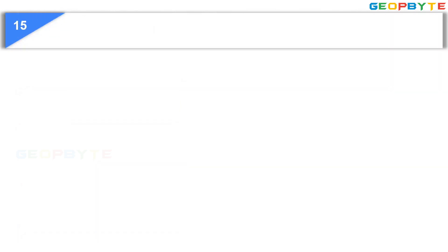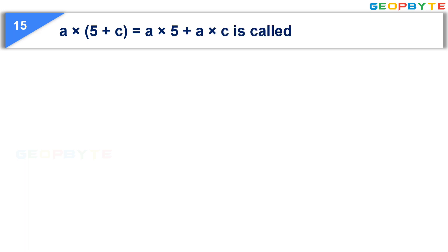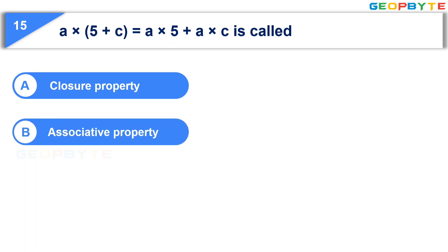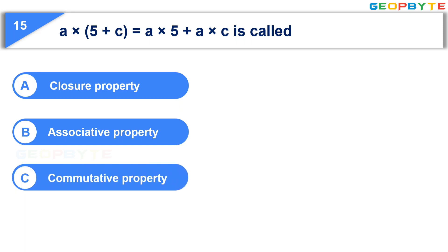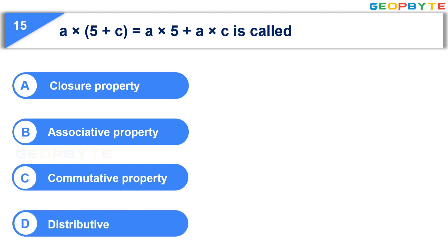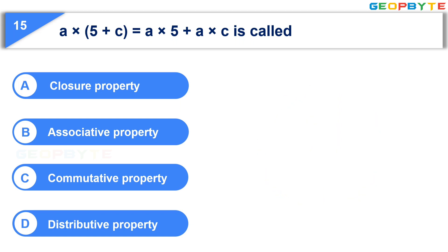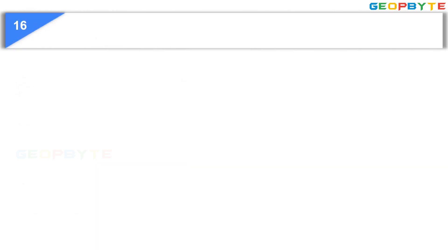The fifteenth question: A × (5 + C) = A × 5 + A × C is called — Option A: closure property. Option B: associative property. Option C: commutative property. Option D: distributive property. Your time starts now. Your time is up. And the correct answer is Option D: distributive property.